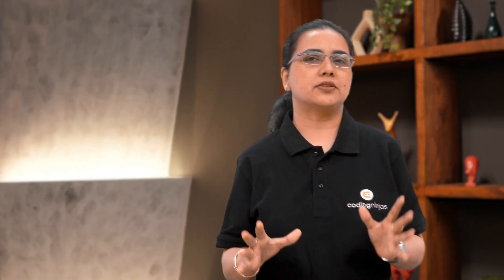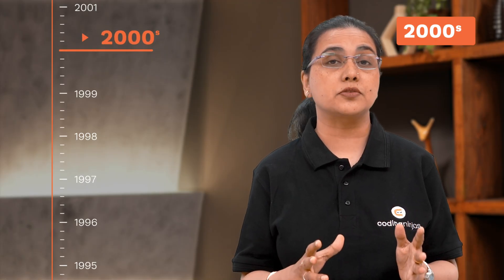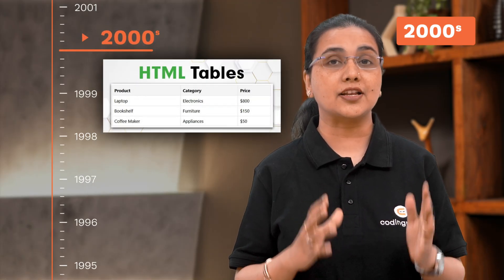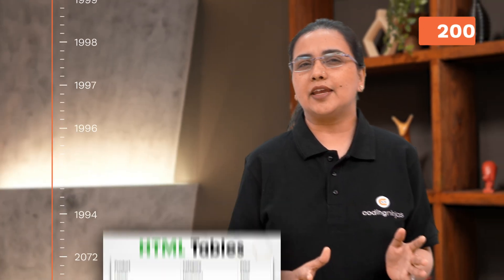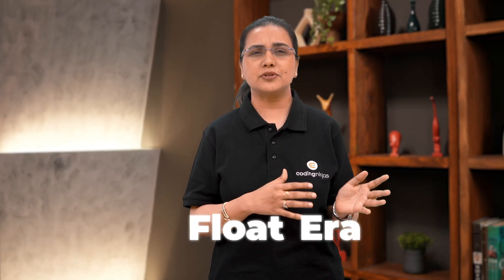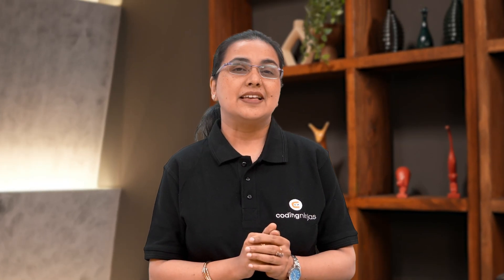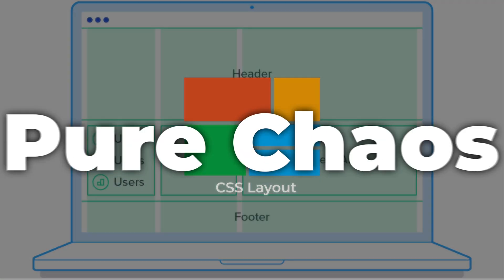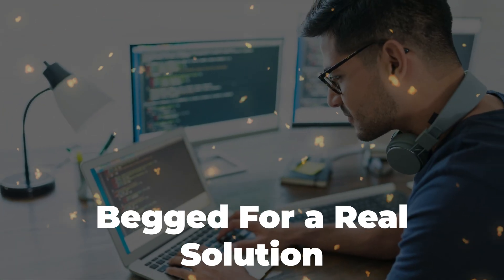But why does this matter? Just picture this — it's the early 2000s. People are laying out web pages with HTML tables, like actual table rows and cells for layouts. Then came the float era, where we floated divs left and right and used clearfix hacks just to make things not collapse. CSS layout used to be pure chaos, so developers begged for a real solution.